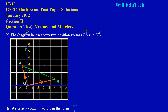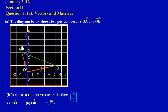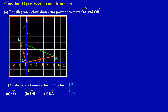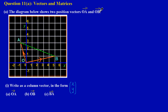In this video we'll be looking at question 11a, a typical vectors and matrices question. In part a, the diagram below shows two position vectors O to A and O to B. We are moving from the point O to A and the point O to B.